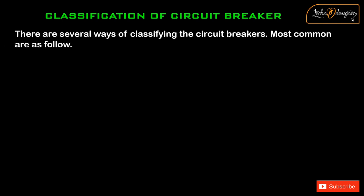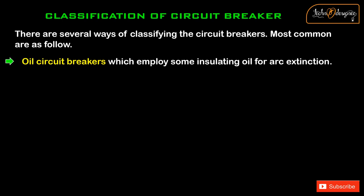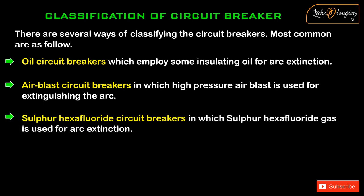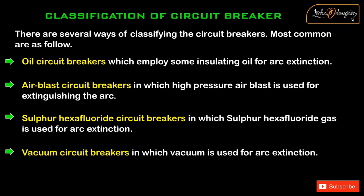Classification of circuit breakers: There are several ways of classifying circuit breakers; the most common are as follows. Oil circuit breakers, which employ some insulating oil for arc extinction. Air blast circuit breakers, in which high pressure air blast is used for extinguishing the arc. Sulfur hexafluoride (SF6) circuit breakers, in which sulfur hexafluoride gas is used for arc extinction. Vacuum circuit breakers, in which vacuum is used for arc extinction.